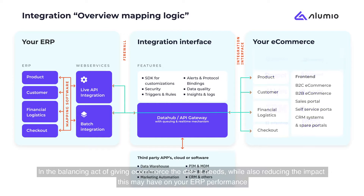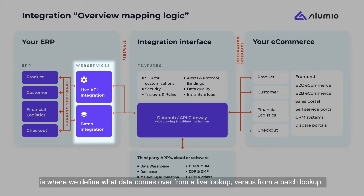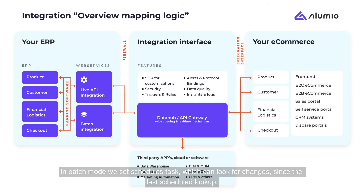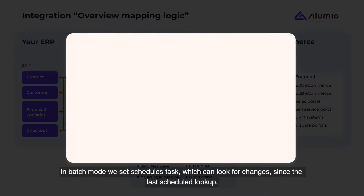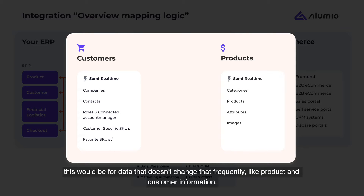In the balancing act of giving e-commerce the data it needs while also reducing the impact this may have on your ERP performance, we define what data comes over from a live lookup versus from a batch lookup. In batch mode, we set scheduled tasks which can look for changes since the last scheduled lookup. This would be for data that doesn't change that frequently, like product and customer information.